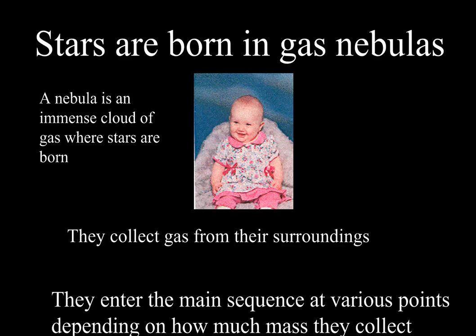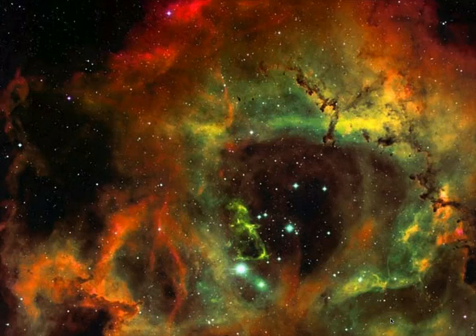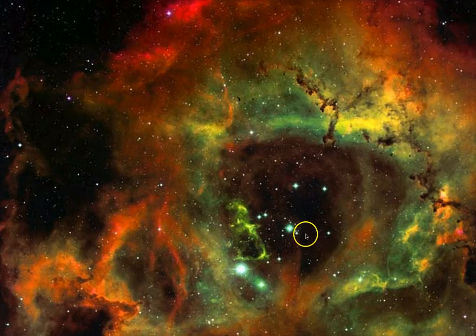Just like babies need to eat a lot, a protostar needs to collect and consume a lot of gas from its surroundings in order to grow and become a star. Some stars become bigger than others because they were able to accumulate more gas in that nebula, so they enter the main sequence at various points depending on how much mass they collect — some enter it much larger than others. Here is a nebula called the Rosette Nebula where we can see stars being born, with dark areas where gas has been used up.